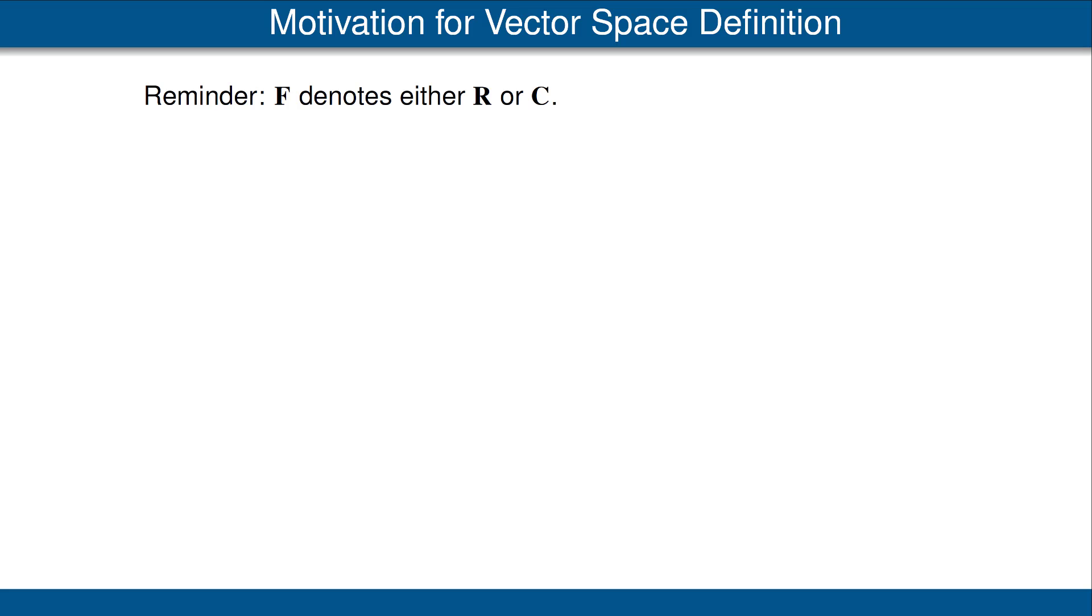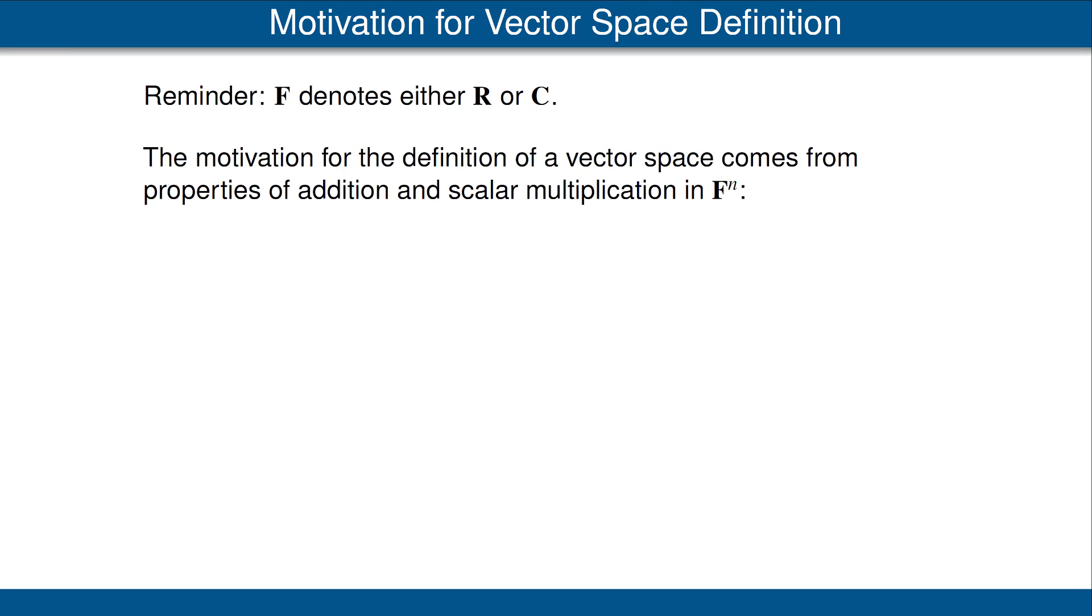Throughout these videos, F denotes either the field of real numbers R or the field of complex numbers C. The motivation for our definition of a vector space comes from properties of addition and scalar multiplication in F^n. Let's list those simple properties.